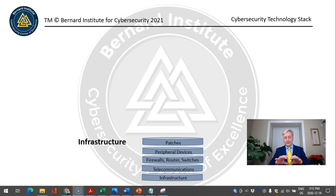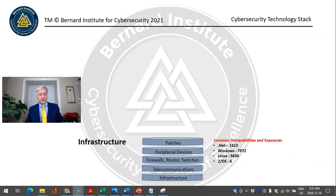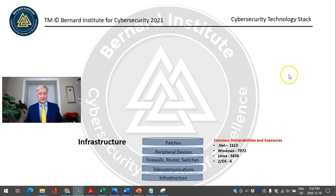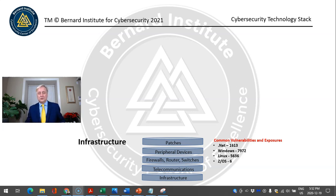Infrastructure is basically the underlying layer that all of our technology sits on. In the Common Vulnerability and Exposure Database, there are 1,619 known vulnerabilities with .NET — the technology Microsoft is using to code Windows products. Traditional Windows has 7,972 different vulnerabilities, which is probably one of the reasons Microsoft decided to migrate to a new coding language and architecture.